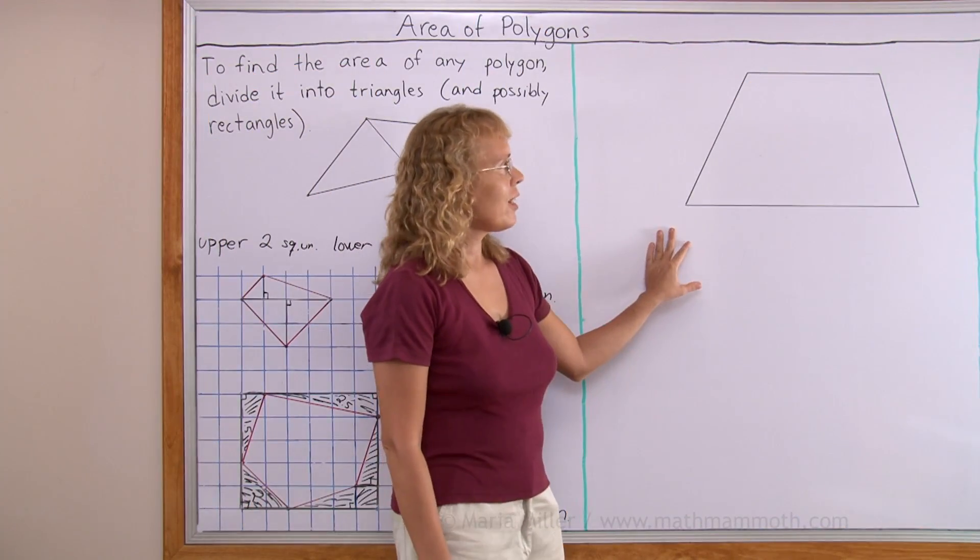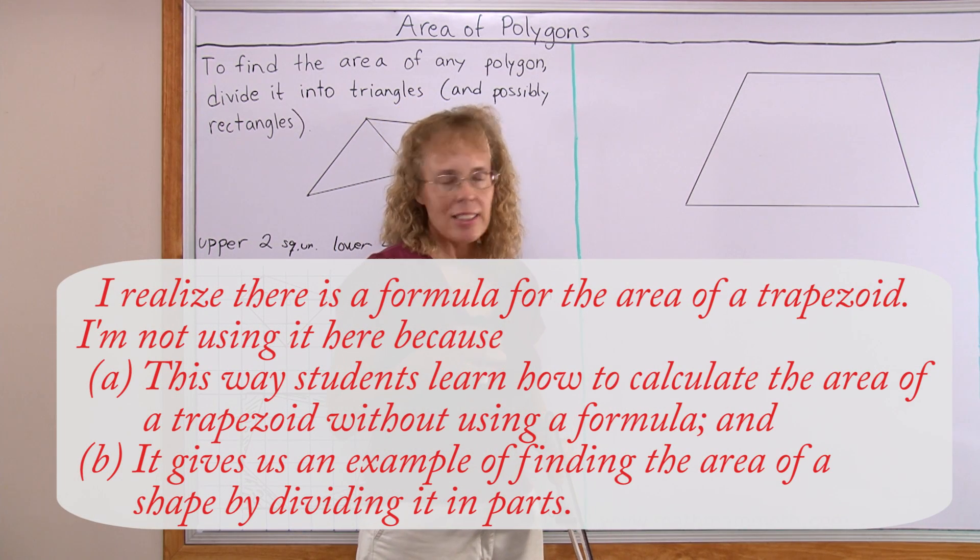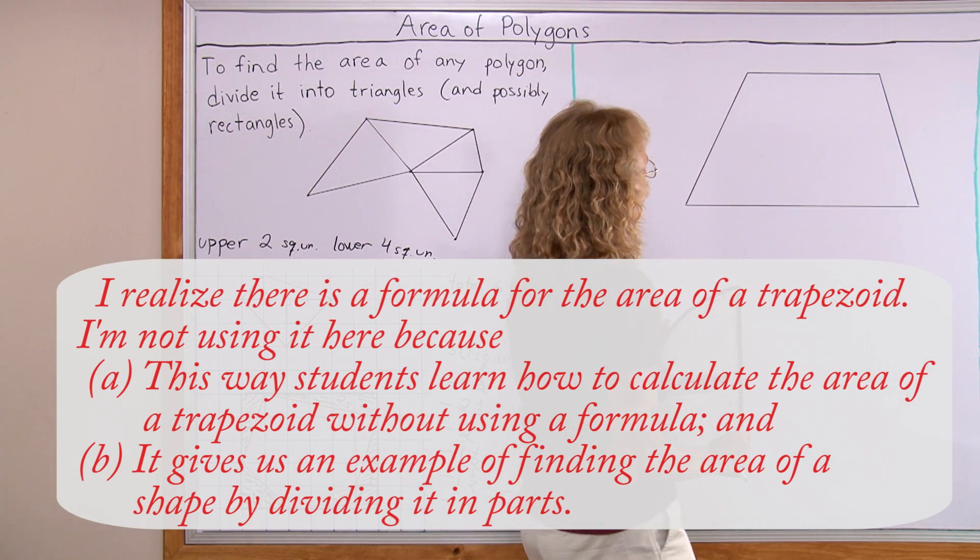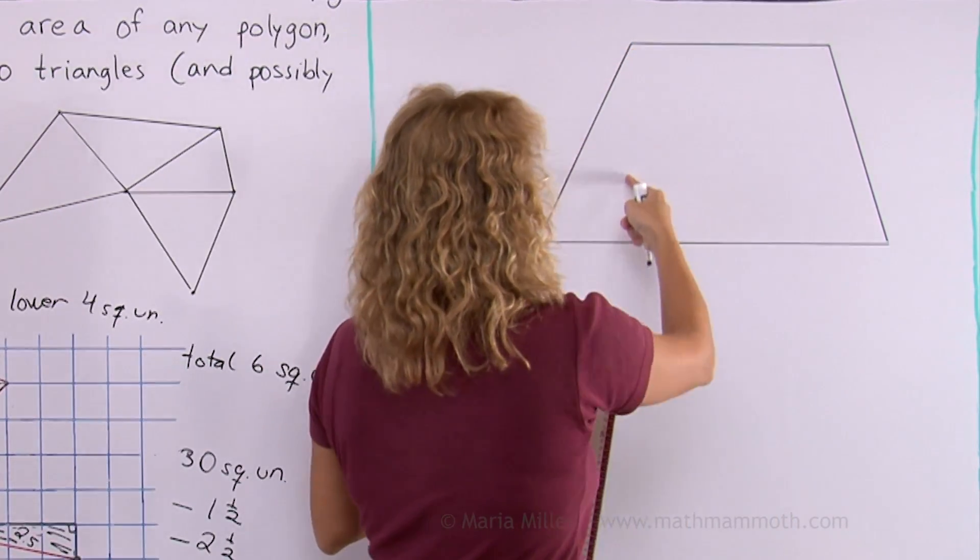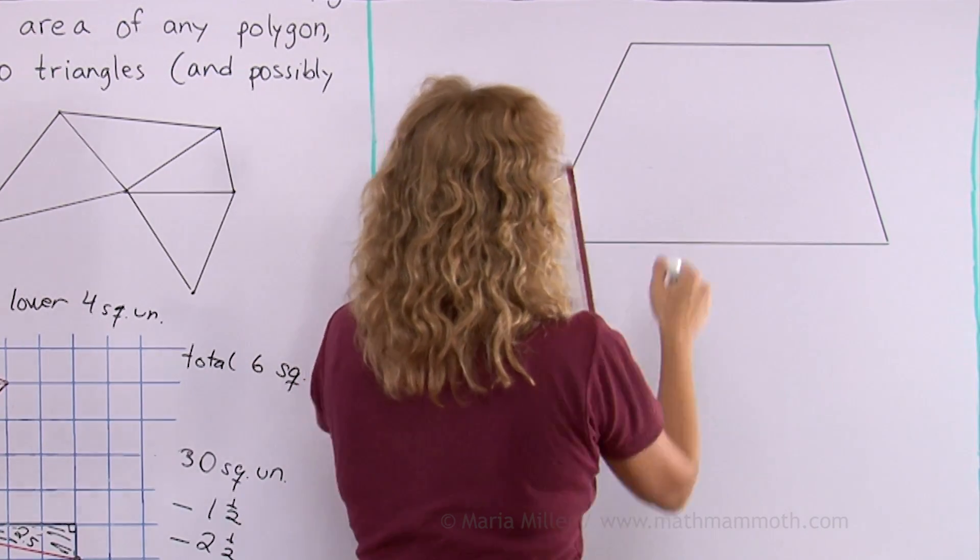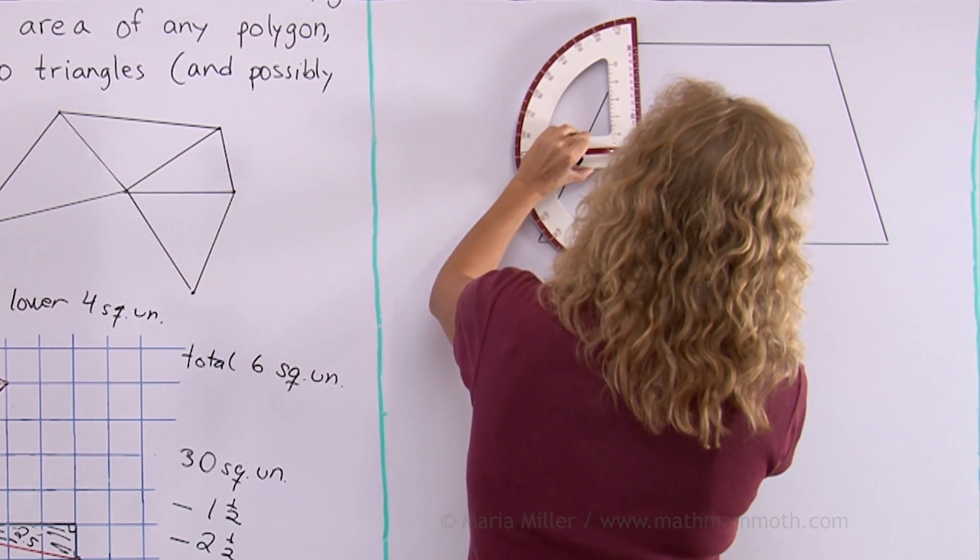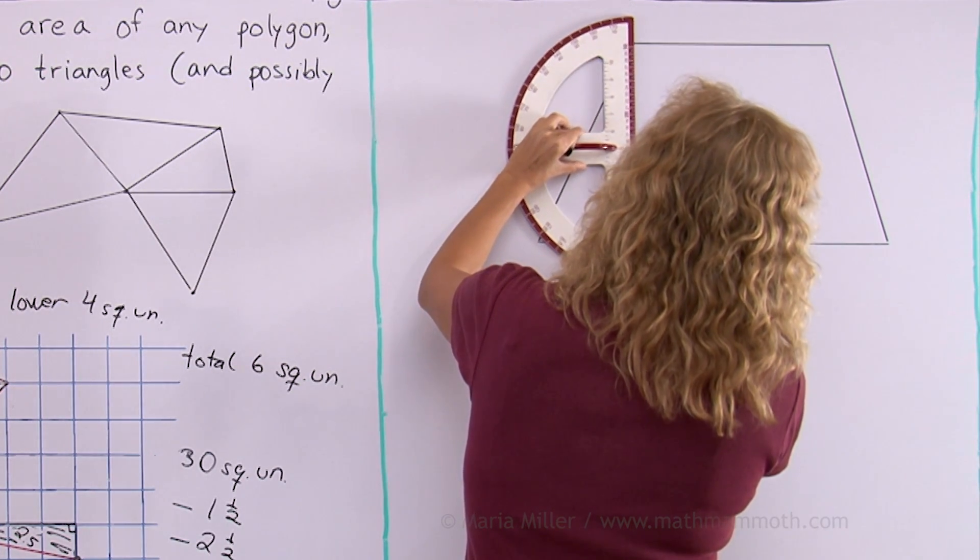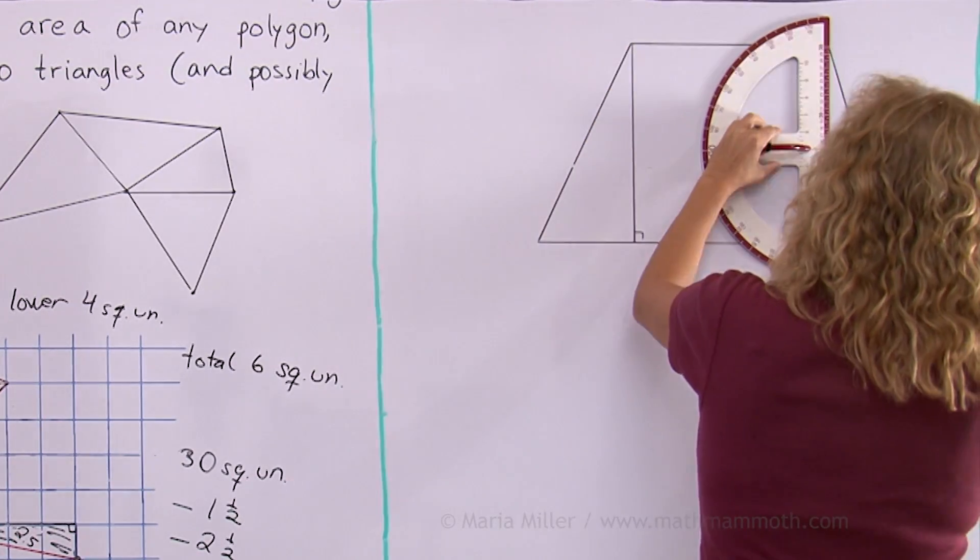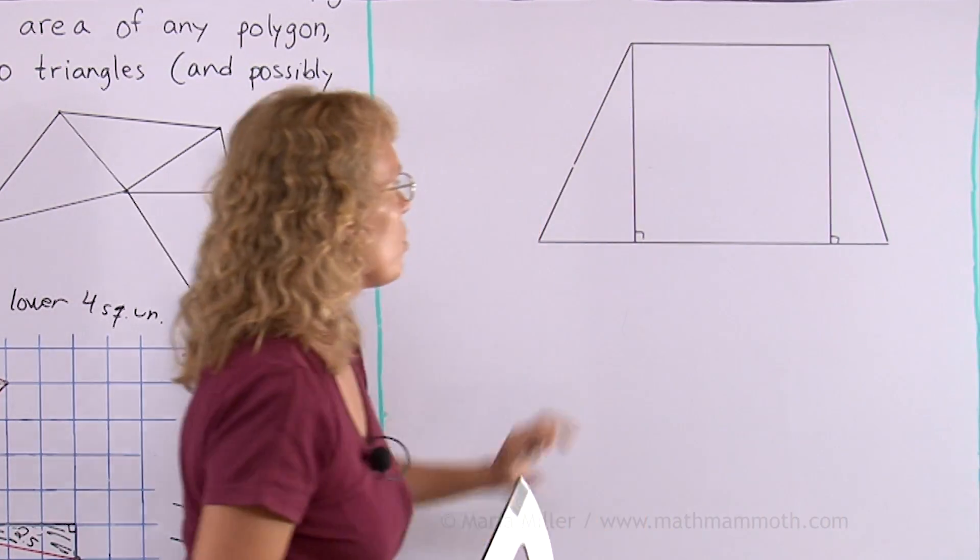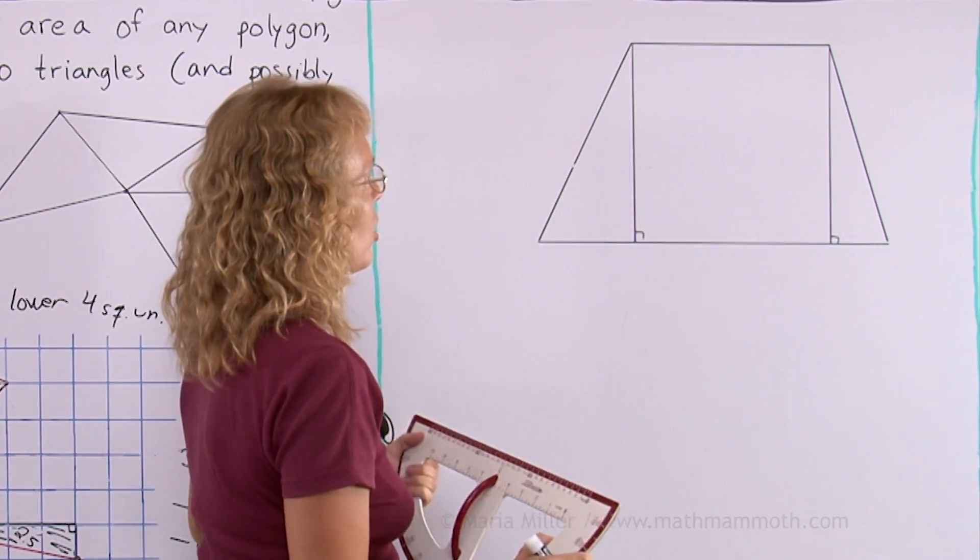Let's go on and find the area of this trapezoid. I will do it by dividing it into triangles and being a trapezoid I will get a rectangle in the middle. I should draw a perpendicular line here. My protractor doesn't quite reach there so I have to eyeball it. Now I have two right triangles and a rectangle in the middle and it's time to measure all these.